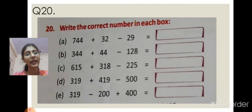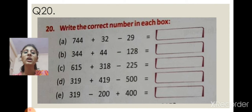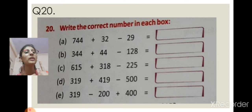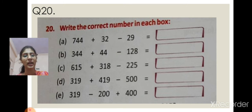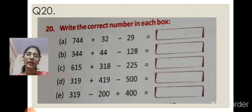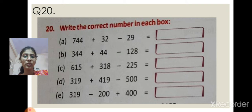So in this, part A: 744 plus 32, minus 29. What you have to do: first you add 744 plus 32, then whatever answer you get, you minus 22 from it. You have to do all these things. I have shown you how to do it for questions B, C, E.